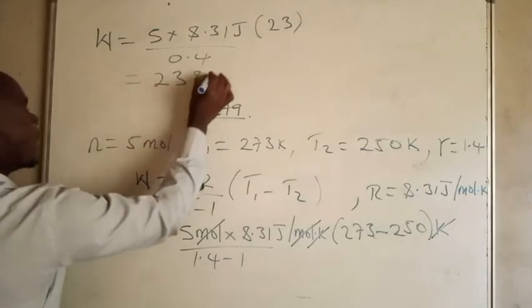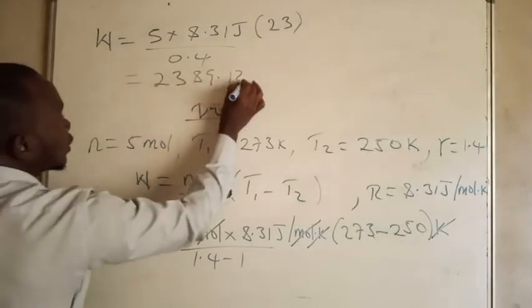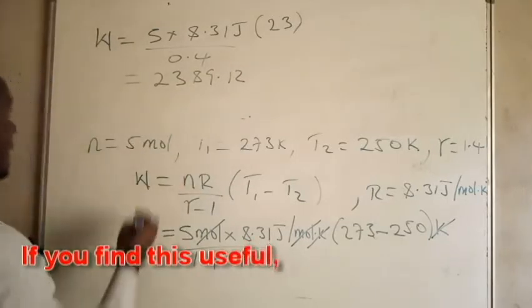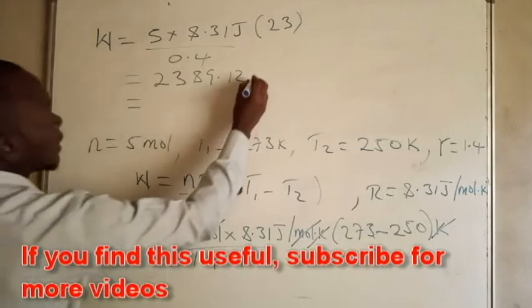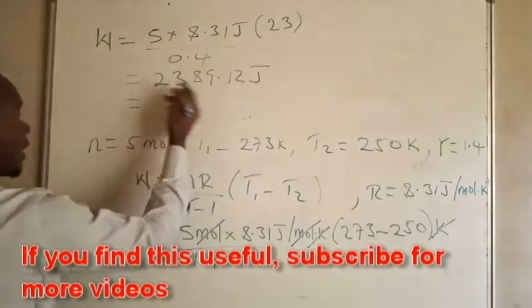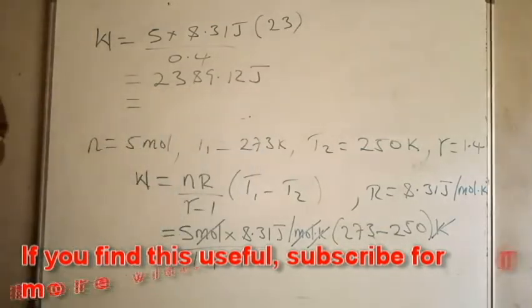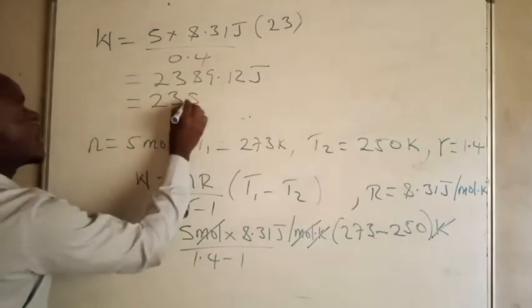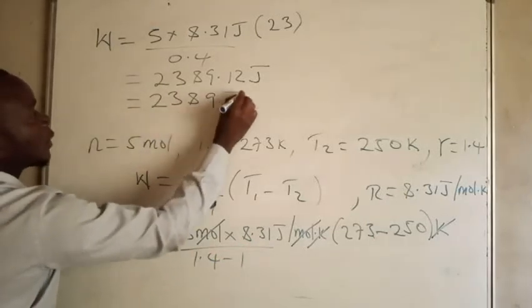2389.125 joules. So from here we can even round it to the nearest whole number, and what we're going to get is 2389 joules.